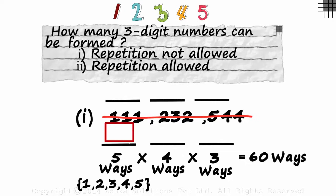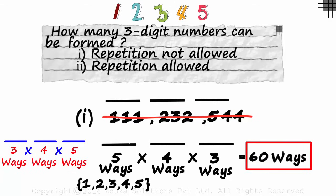Here we started off with the hundreds place. Can we start off with the units place? Of course yes! We could have. If we would have started off with the units place, we could say that the units place could be filled in five ways. Once the units place is filled, the tens place would be filled with any of the remaining four digits. And once two digits are utilized, the hundreds place can be filled with any one of the remaining three digits. Three times four times five will also give us the same answer: sixty ways.